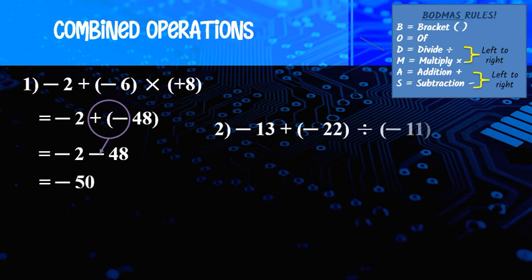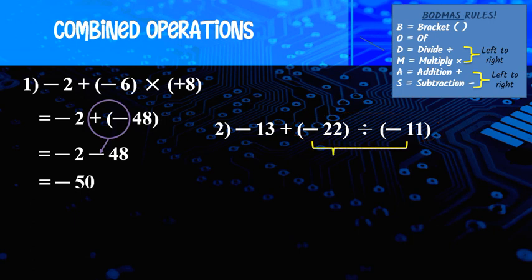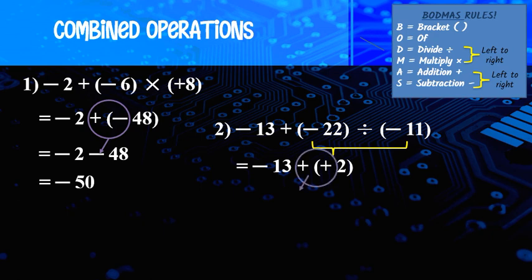Question 2: negative 13 plus (negative 22 divided by negative 11). We have plus and divide, so BODMAS says solve divide first. Negative 22 divided by negative 11 — negative negative is positive — 22 divided by 11 is 2, so positive 2. Copy the rest: negative 13 plus positive 2 — plus plus remains plus. Different sign, minus the number, negative is bigger, so the answer is negative 11.